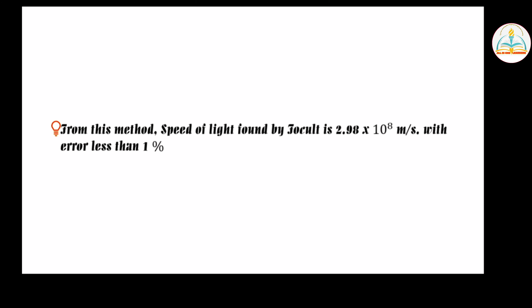The speed of light obtained is 2.98 times 10 to the power 8 meters per second, with an error less than 1%. The actual speed of light is 3 times 10 to the power 8 meters per second. So from Foucault's method, we have determined the speed of light with less than 1% error. I hope you understood. If you like this video, please like, share, and subscribe to the channel. Thank you.